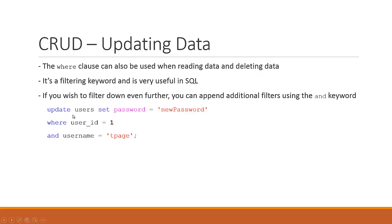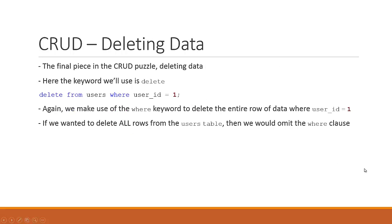If you use a filter and there's no match, it wouldn't update any rows. For example, if we update the password where user_id equals 500 and that user_id doesn't exist, it would not update any rows — there would be no change to the database. That's something useful to understand. Updating data is fairly straightforward; the only curveball really is the WHERE statement.